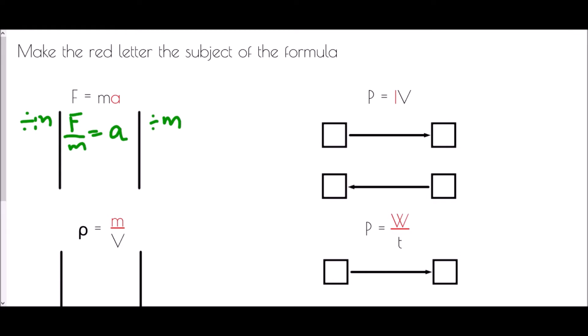With P = iv, I want to make I the subject using the flowchart method. Whatever you want to make the subject is where you start. In the formula, 'iv' means I has been multiplied by v, giving iv, which equals P. Working backwards, we reverse the operations: instead of multiplying by v, we divide by v, giving P over v. Therefore I = P over v, and I is now the subject.